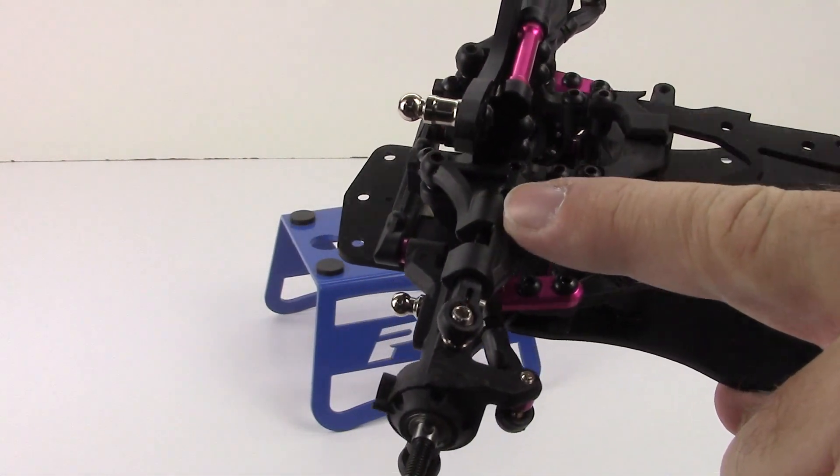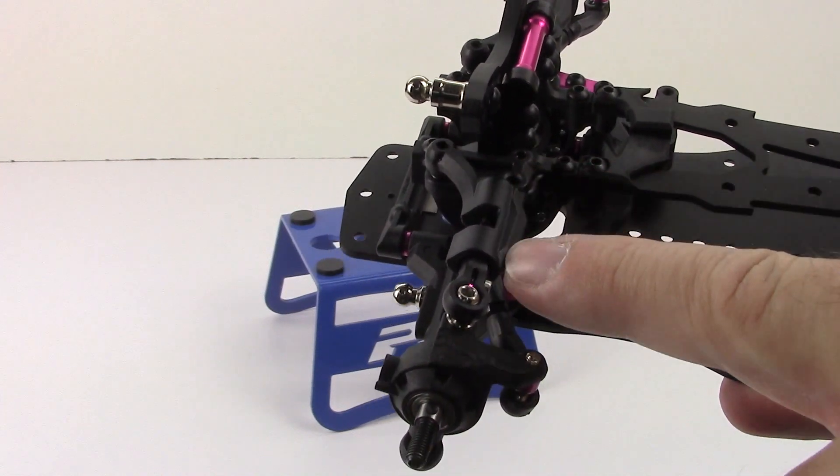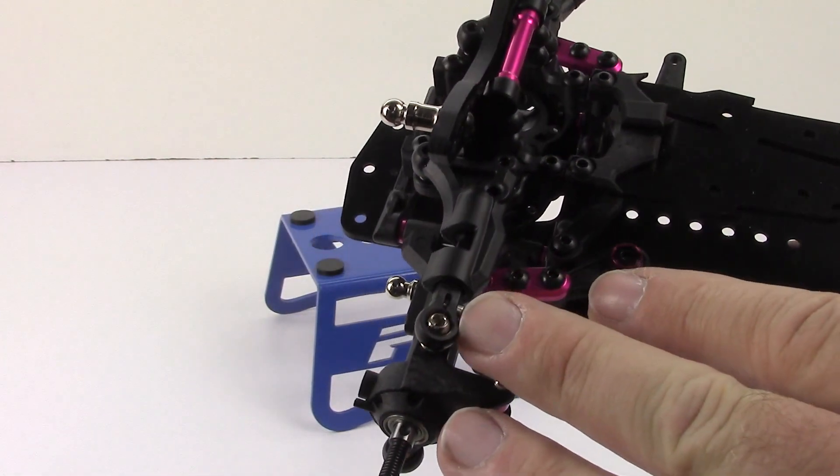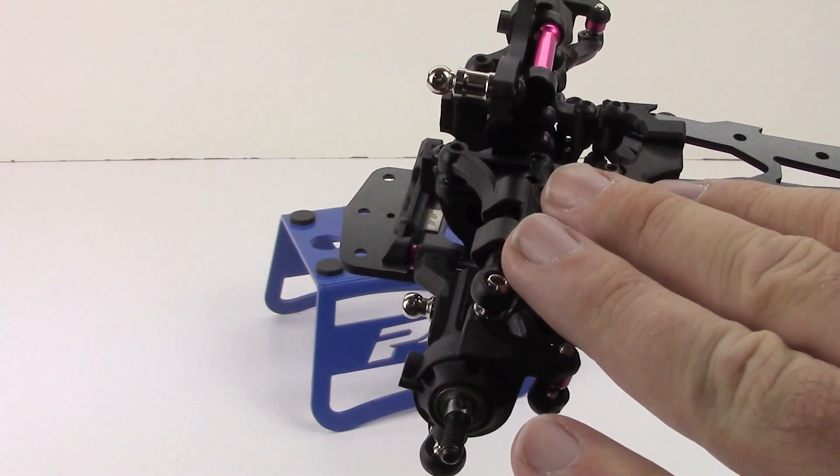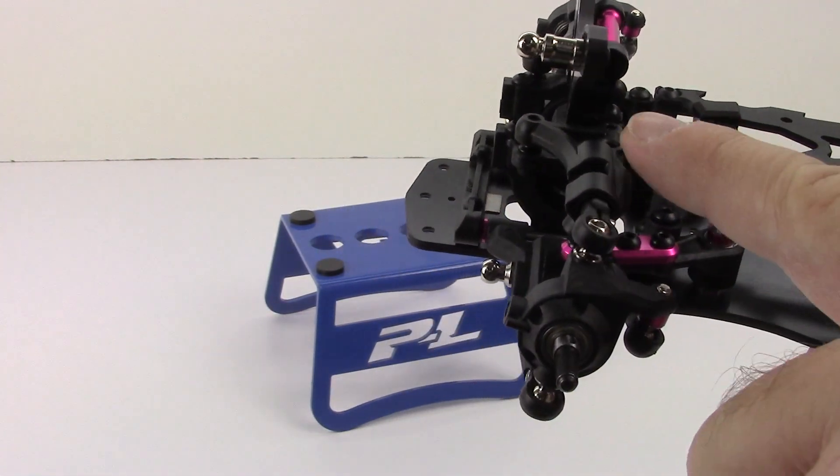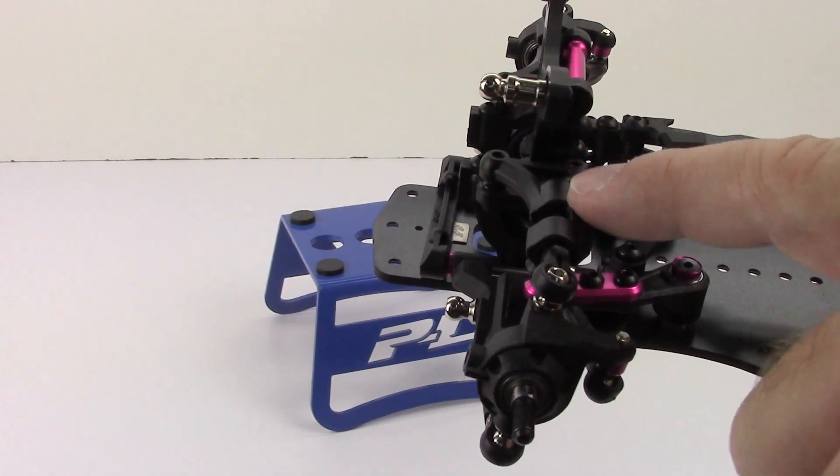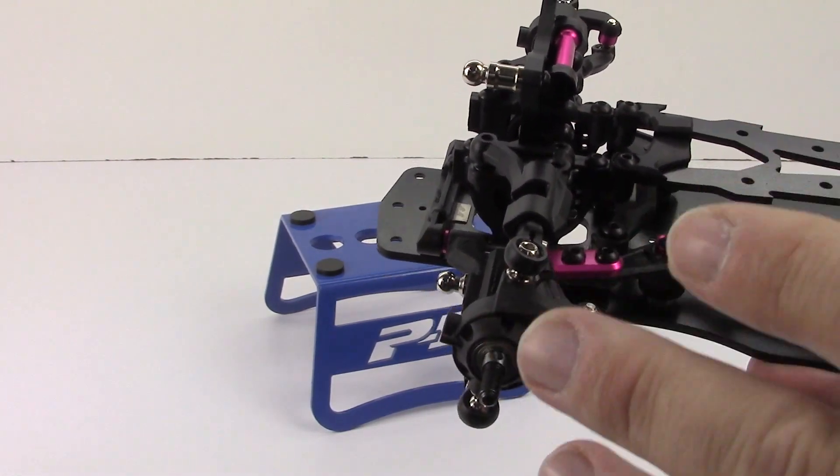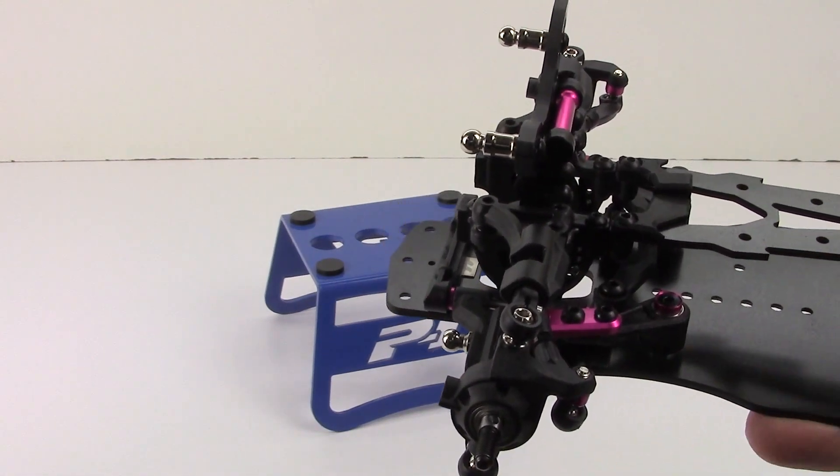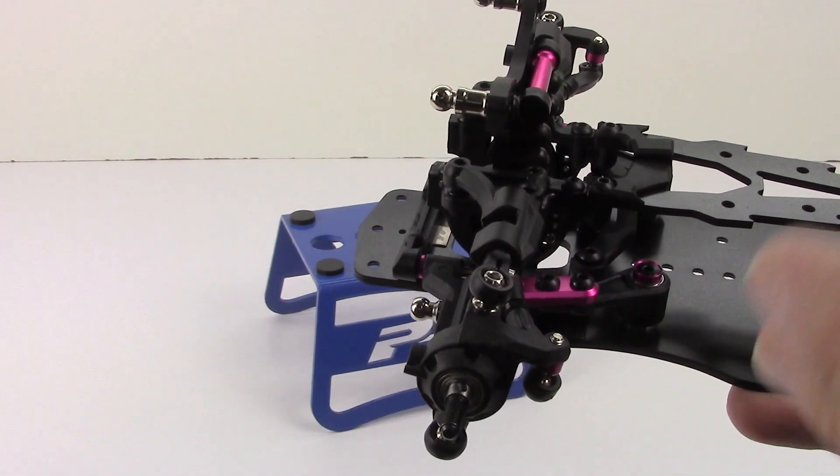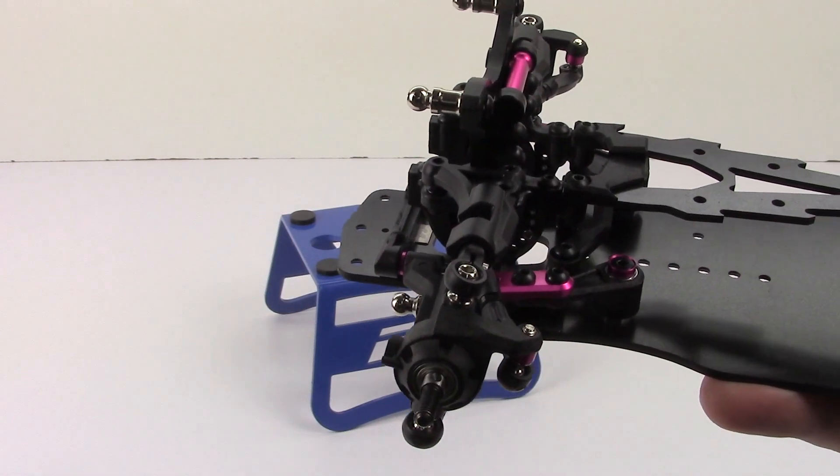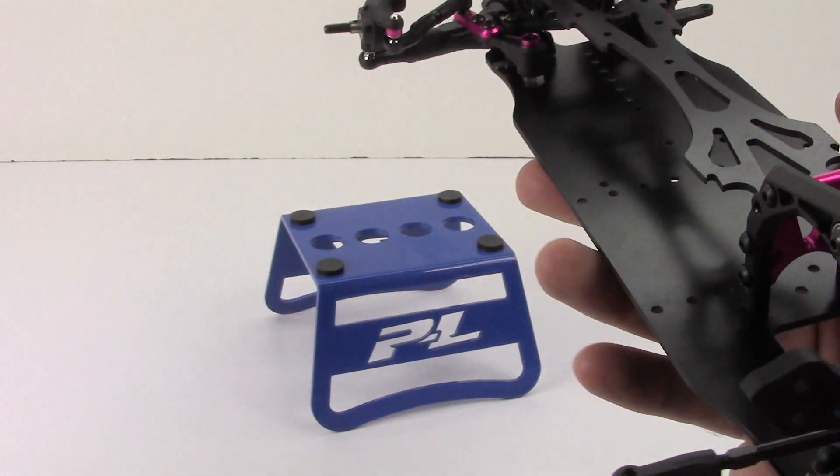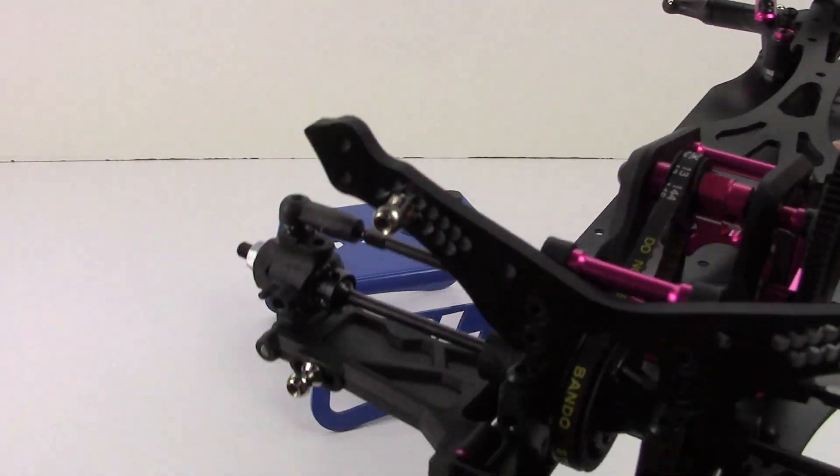The upper A-arm or upper control arm, I put those on backwards initially. I'm used to some of the ARRMA vehicles where they are mounted the opposite direction or have the L shape in the opposite way and my steering angles were completely screwed up. It took me a little while to figure that out and of course the owner's manual, if I would have read it, it would have been in there.